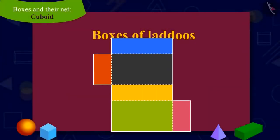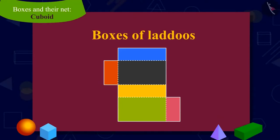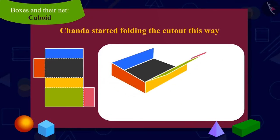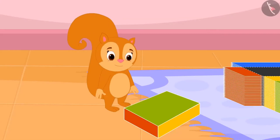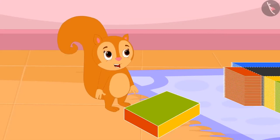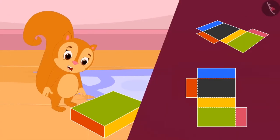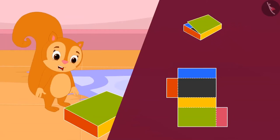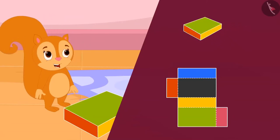Appu showed Chanda a cardboard cutout. He asked Chanda to fold the cutout on the line with dots on it. Chanda began to fold the cutout in this manner. Chanda couldn't believe her eyes. The laddus box was ready by folding the cutout on those dotted lines.